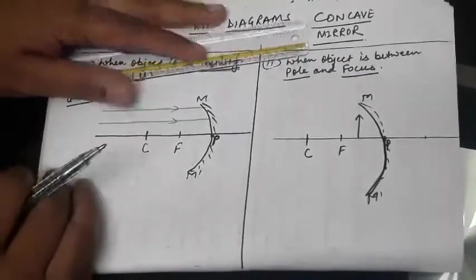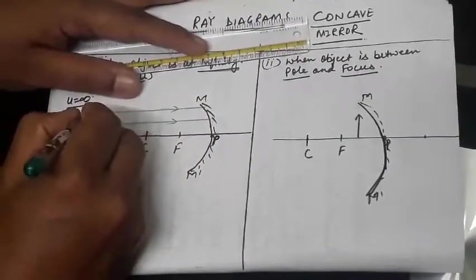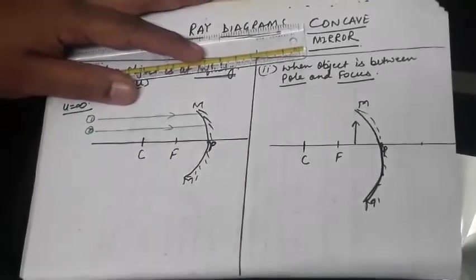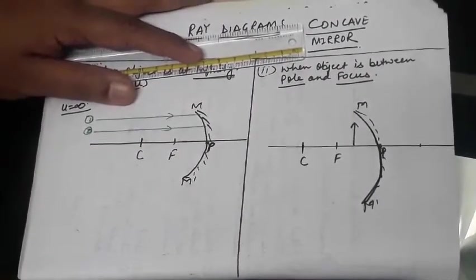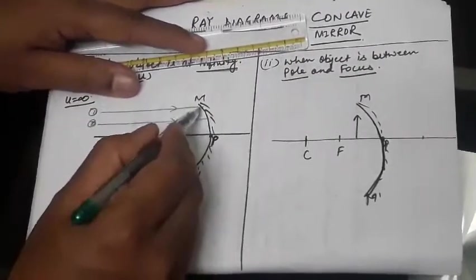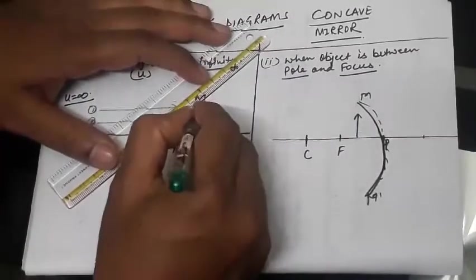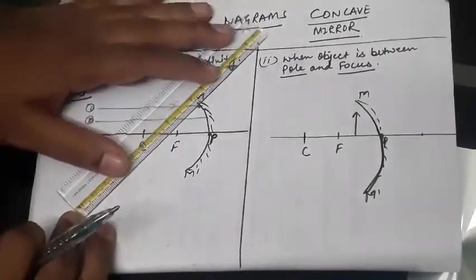According to the rule, two rays I have taken, one, two. According to the rules of the diagram, when light strikes the mirror parallel, it will return back because this is, sorry, concave mirror and it is a converging mirror.